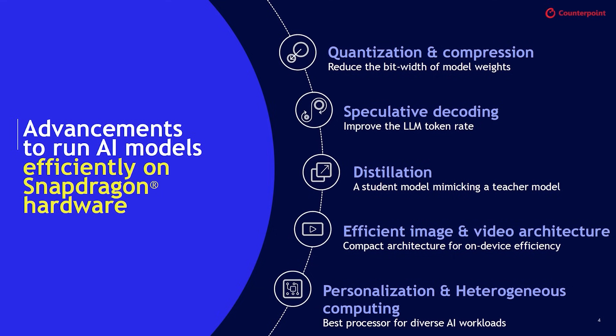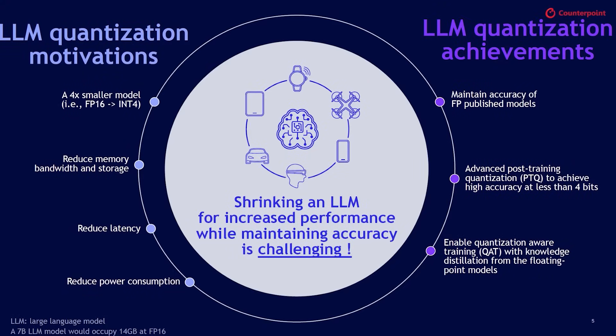There are many ways to compress these models. One is quantization — you can take these models and quantize weights to four bits or even two bits, though it comes with accuracy challenges. A lot of focus goes into algorithms to improve accuracy and map it similarly to what would exist in a floating-point definition. Most commercially deployed models use approximately W4A16 — activations at 16 bits and weights at four bits — compressing the model to about 3.5 to 4 GB compared to 13 GB, roughly a 3x reduction.